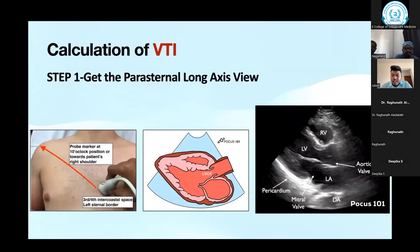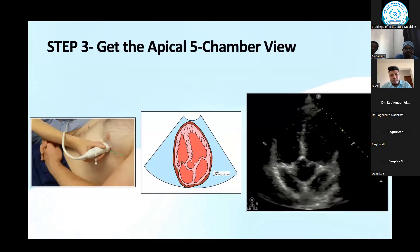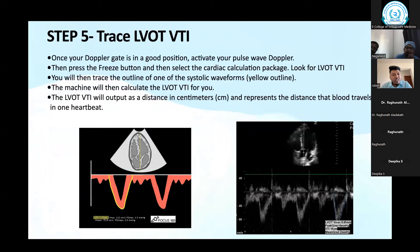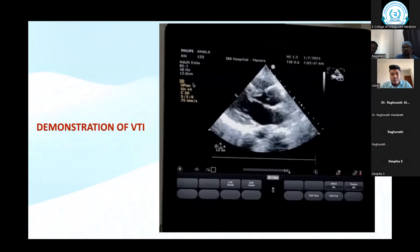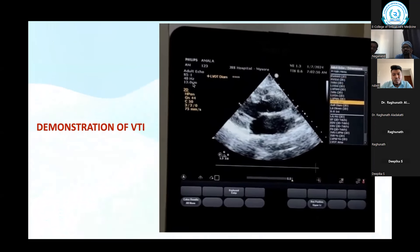Summary of steps: Step one — parasternal long-axis view. Step two — measure LVOT diameter with valves maximally open, freeze and measure. Step three — four-chamber view, tilt to three o'clock, get five-chamber view. Place pulse wave Doppler at the aortic valve opening. Press pulse wave Doppler, get wave tracing, freeze, press measure, trace the area. This is a video done by our echotechnician at JSS hospital — more accurate because they do this daily multiple times.